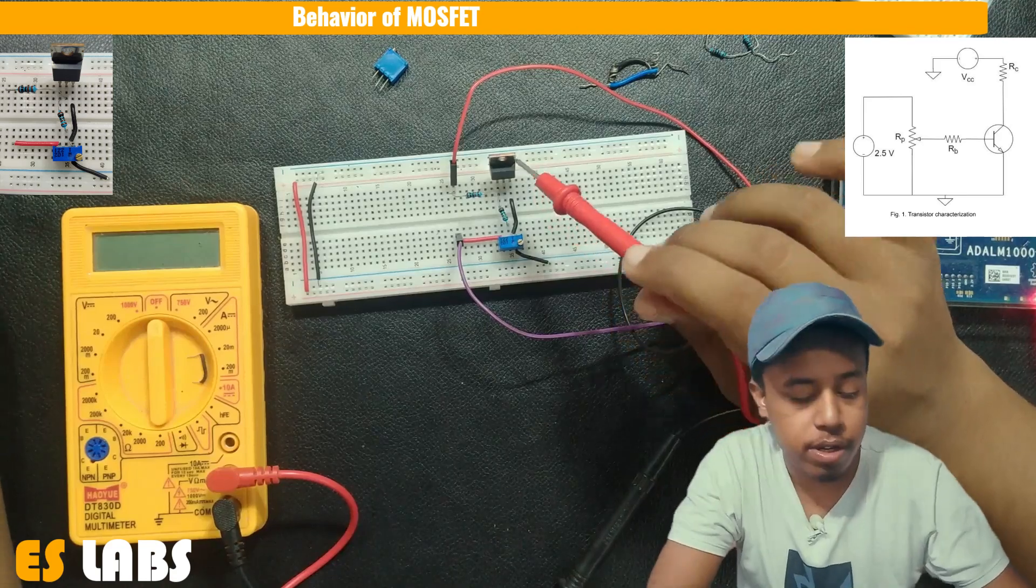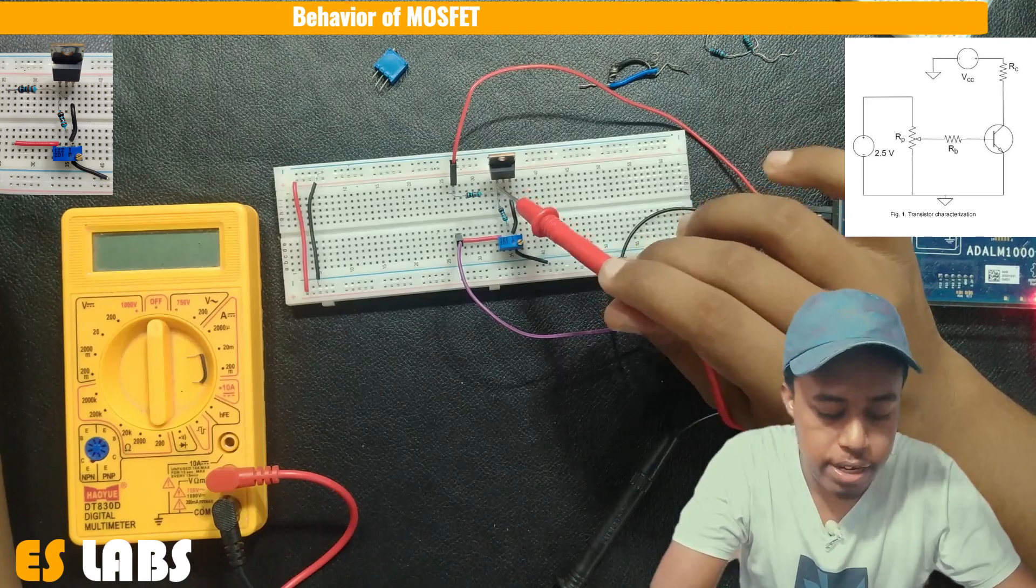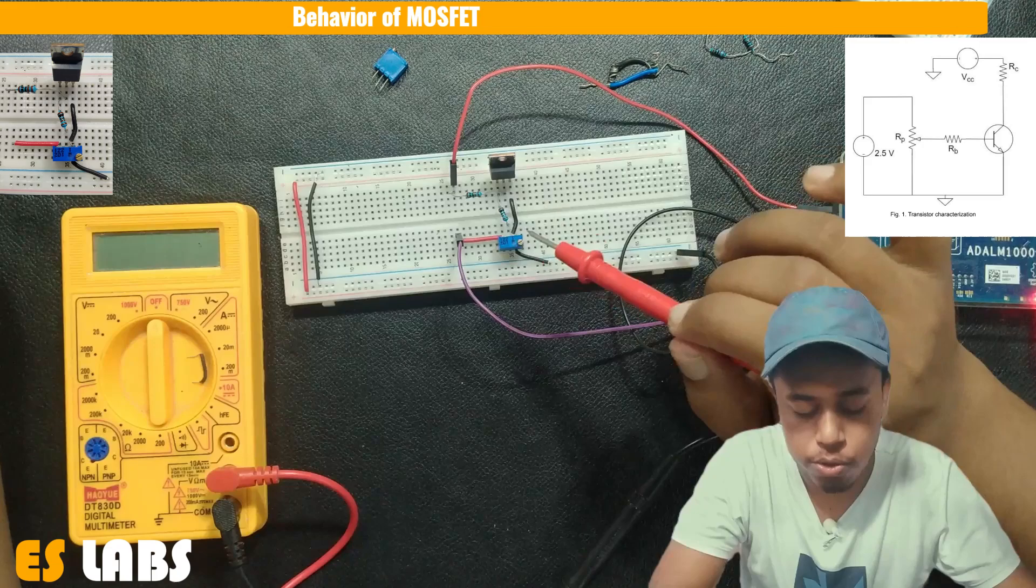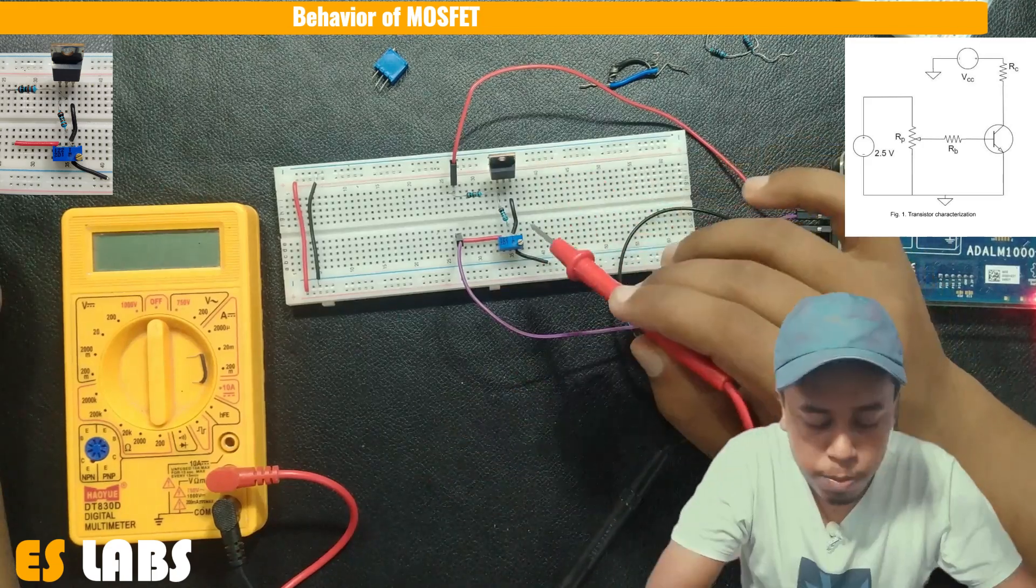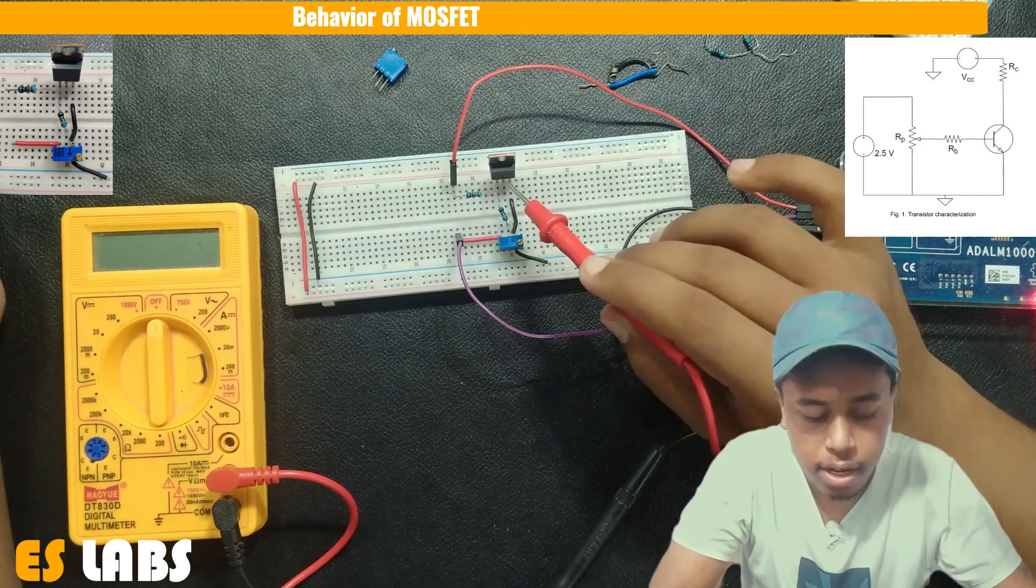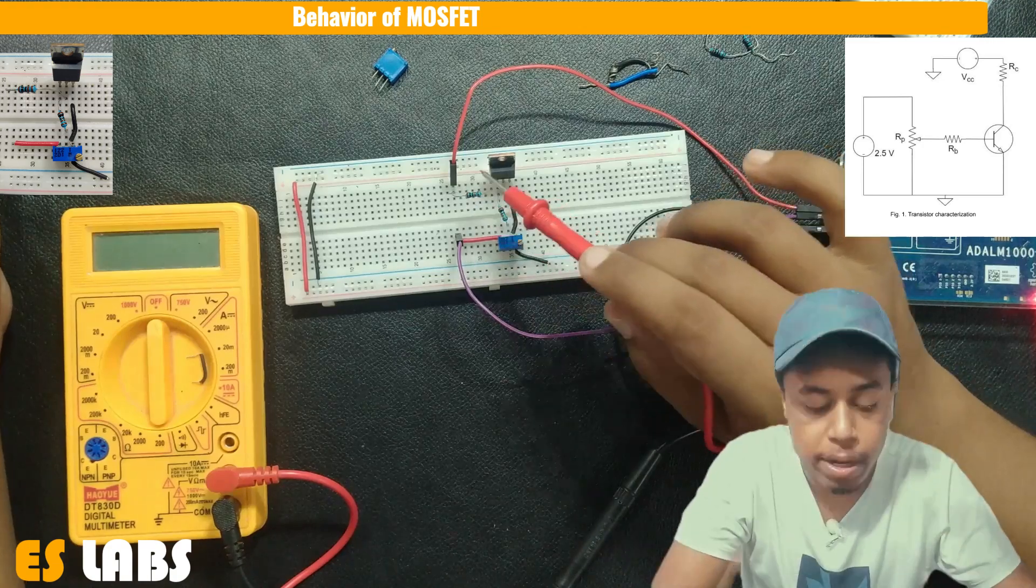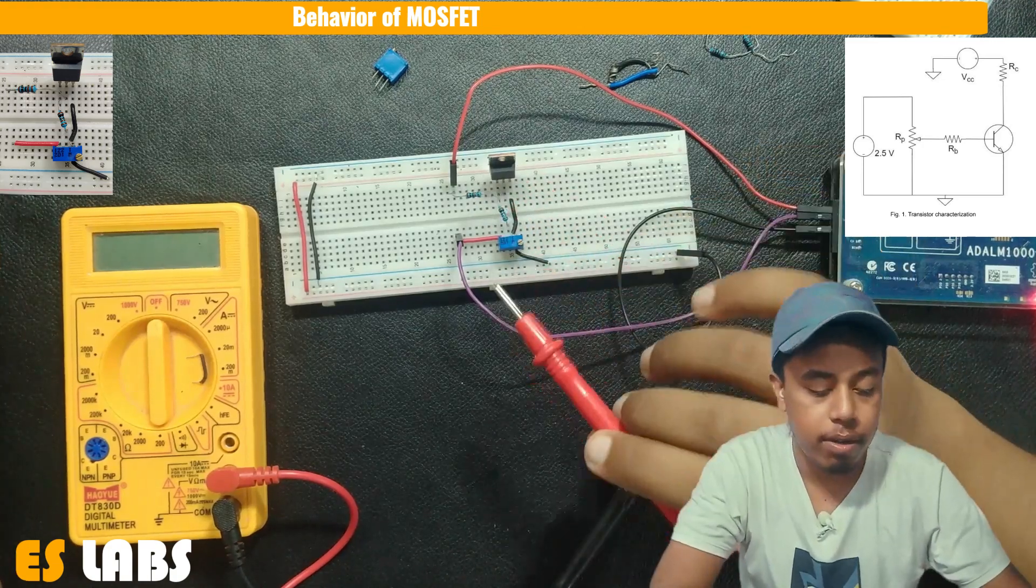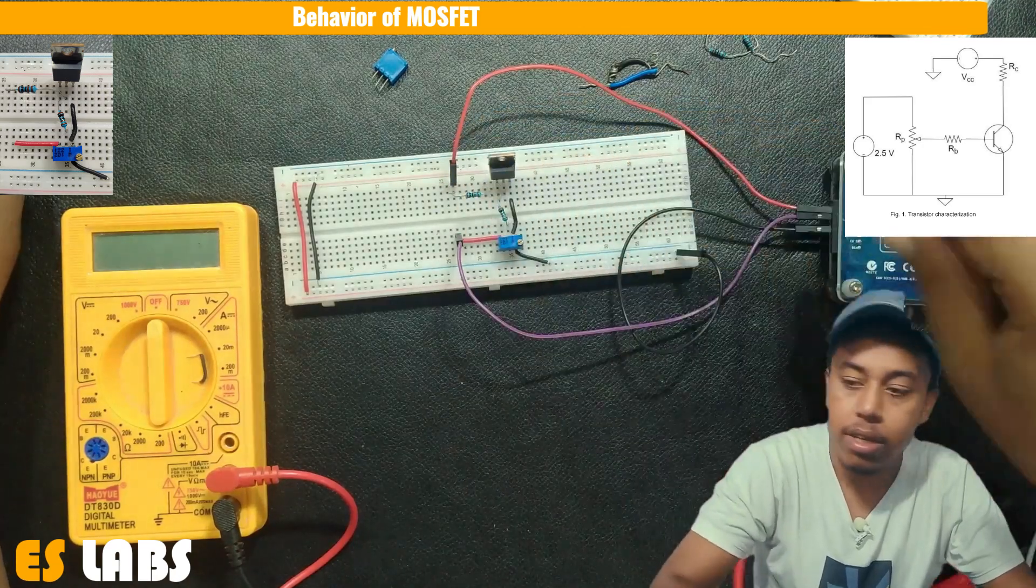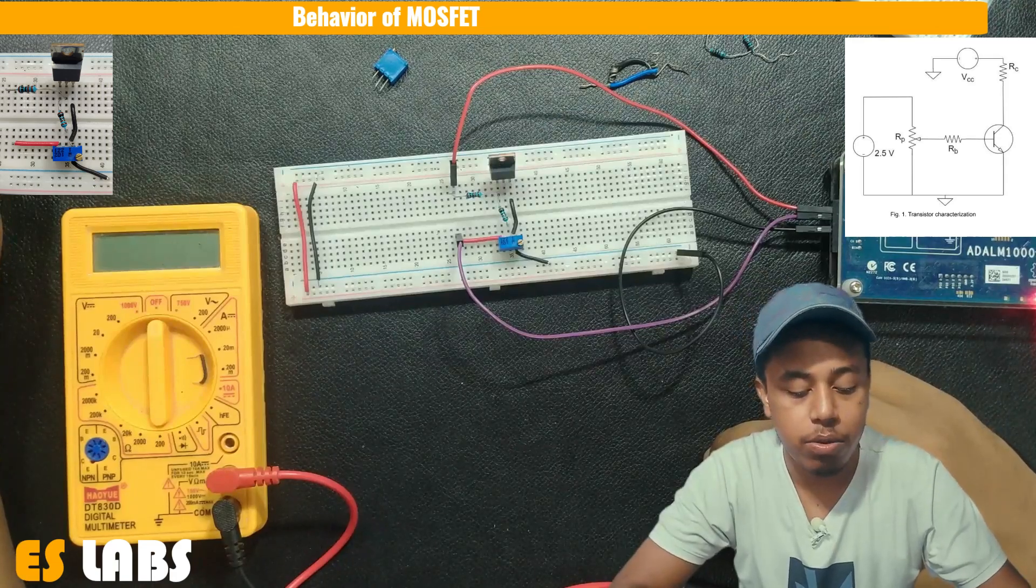Now I am using the MOSFET, so I have done a slight change. The first terminal from this side is our gate and the second is drain and the third is source. The output of this potentiometer is going to the gate and the VCC is giving its voltage to drain via a resistor of 1000 ohm. So now we are going to increase the voltage of this VCC from 1 volt to 5 volt and measure the voltage across the drain and the source.